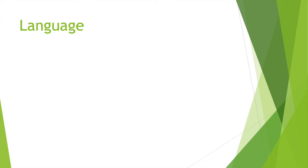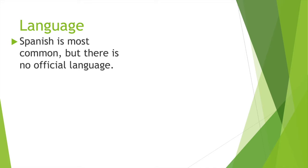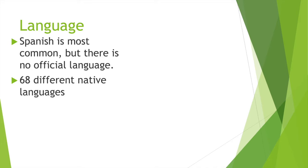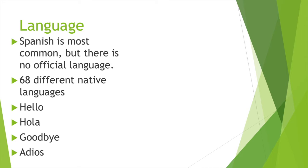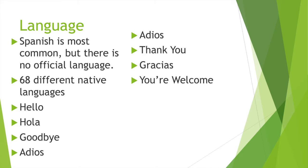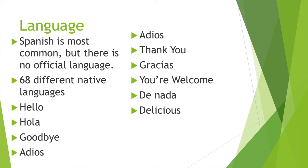Let's talk about the Spanish language. Spanish is the most common language in Mexico, but there's actually no official language. However, there are still almost 70 different native languages spoken in different parts of the country. Let's go over a few common Spanish words: hello is hola, goodbye is adiós, thank you is gracias, you're welcome is de nada, and delicious is delicioso.